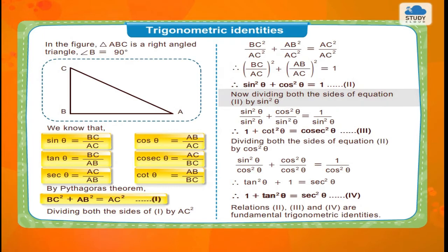Now, dividing both the sides of equation 2 by sin²θ, sin²θ upon sin²θ plus cos²θ upon sin²θ is equal to 1 upon sin²θ. Therefore, 1 plus cot²θ is equal to cosec²θ, equation 3.